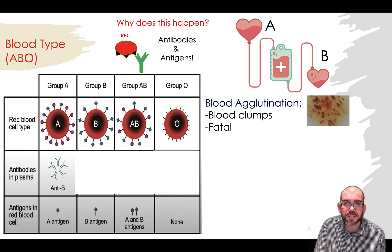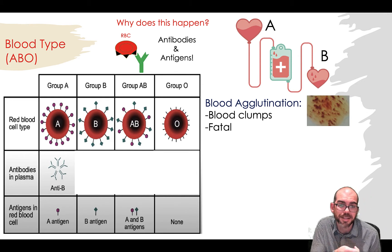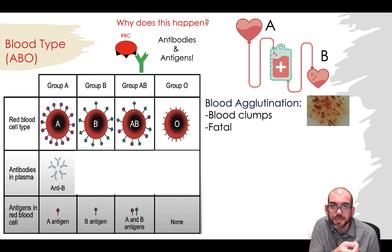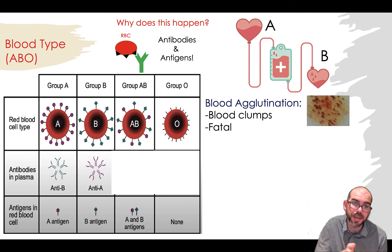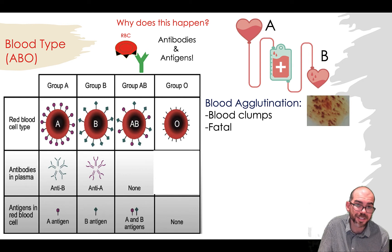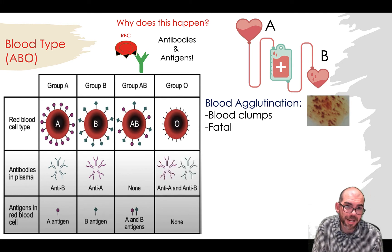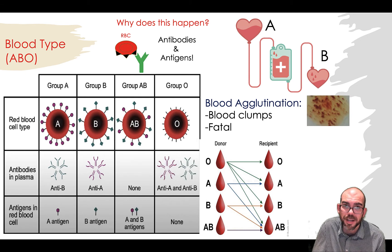Someone who's type A blood has the A antigen in their body and has antibodies that are anti-B that will attack any B blood that goes in. Type B has the opposite — they have the B antigen, so they have anti-A antibodies. This is what caused the clumping in the example we looked at. Type AB doesn't have any of these antibodies, and type O has antibodies for both.